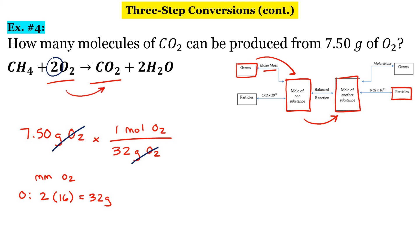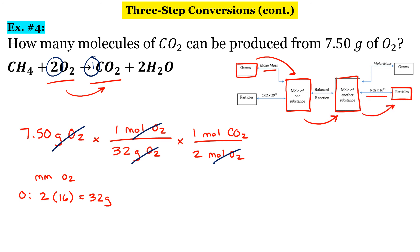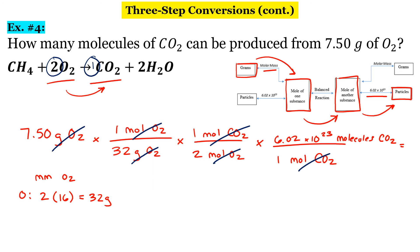Our ratio is 2 to 1 — remember, if there isn't a number, that's a 1. So for every two moles of O2, we have one mole of CO2, carbon dioxide. Finally, to go from moles of carbon dioxide to molecules, we're going to use Avogadro's number: for every one mole of CO2, we have 6.02 times 10 to the 23rd molecules. When I crunch the numbers, I get 1.0546 times 10 to the 22nd.